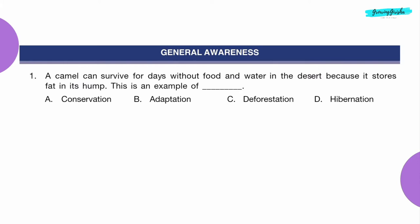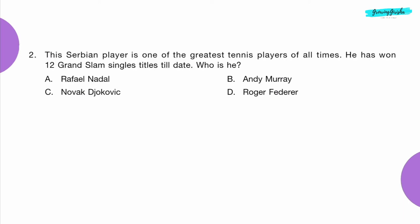General Awareness. Question 1: A camel can survive for days without food and water in the desert because it stores fat in its hump. This is an example of dash. Option B: Adaptation.